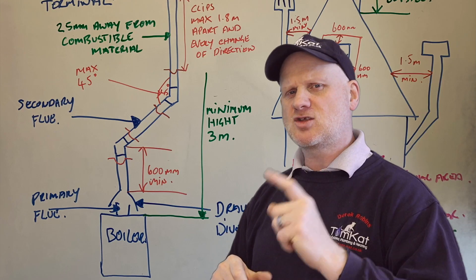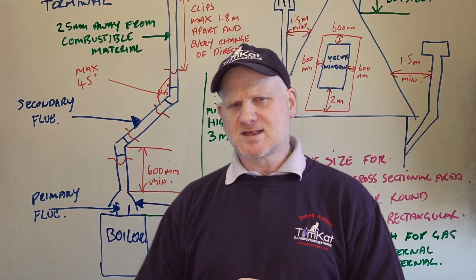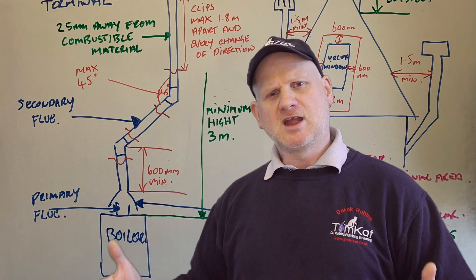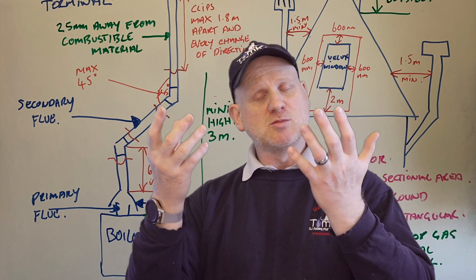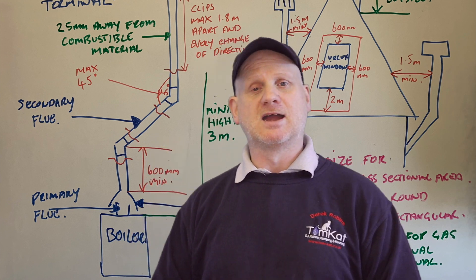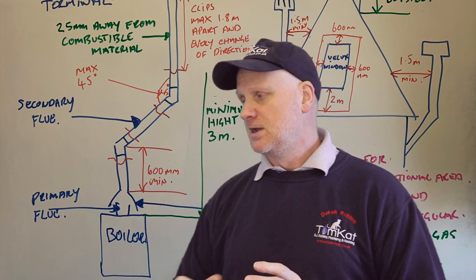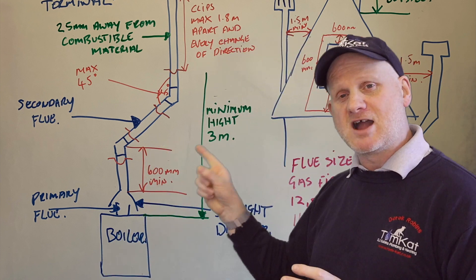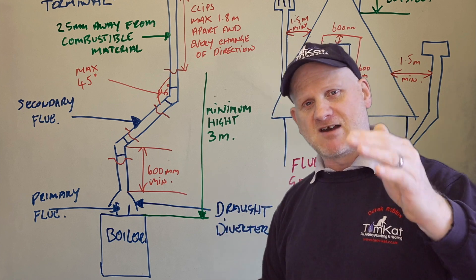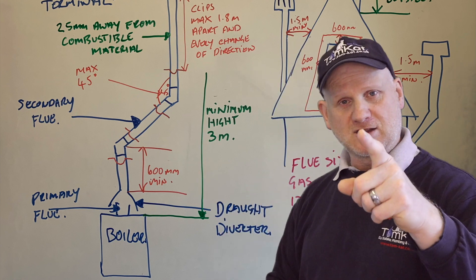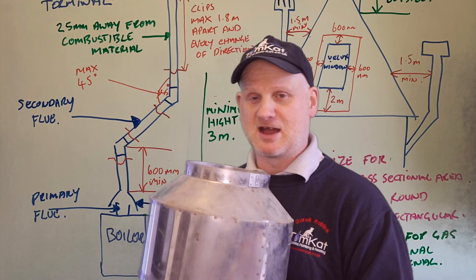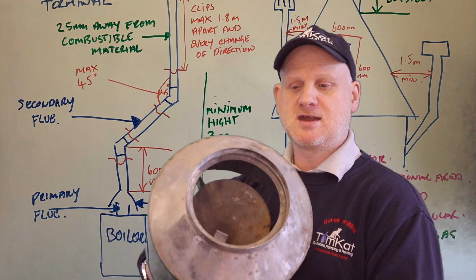Finally, the draft diverter stops excessive flue pull — if the flue is pulling too much it might lift off the burner and lift the pilot light, so it breaks that as well. The draft diverter is incredibly important and it can either be external or built into the appliance.